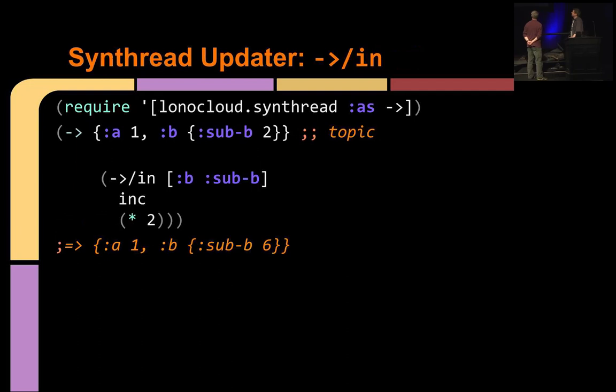Let's look at another one here. Here's threaded in. So threaded in is like threaded first, changes the topic, but it takes an extra parameter here. This first parameter is a path. It's a path like get in or associate in takes. Exactly. And that is the new topic, the subtopic, if you will, for the body to execute on. And it just keeps track of the fact that it's inside a map. It does. And it jams the result back in. In fact, it's quite a bit like update in in that way. Sort of like a syntactical update in. That's right. You got it. Interesting.